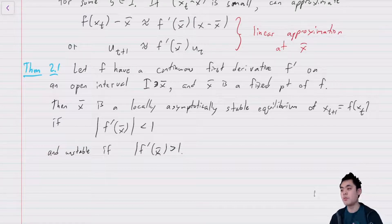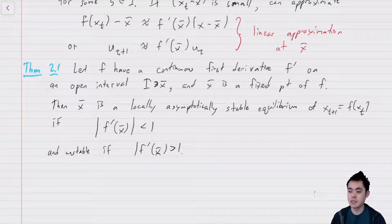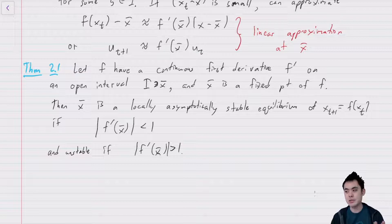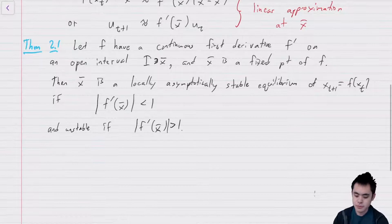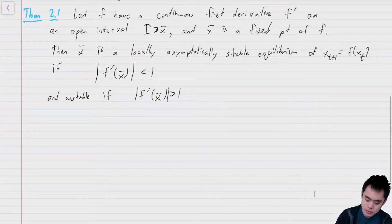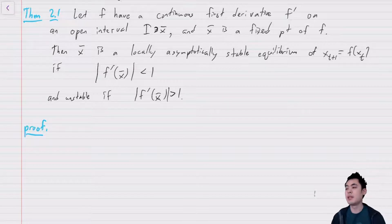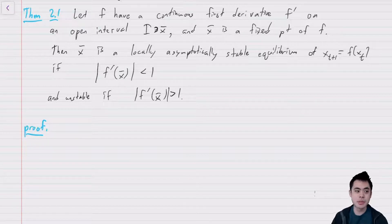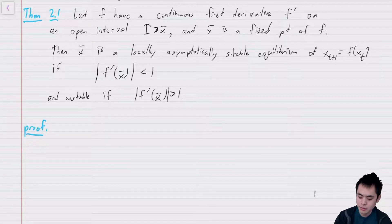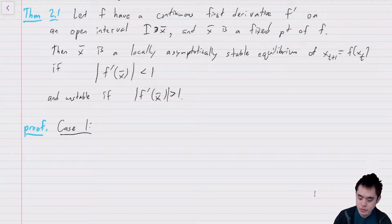Note that we aren't saying anything about what happens when |f'(x-bar)| = 1. That turns out to be a much more subtle case which we'll get to on Thursday but won't be covering in today's video. The basic reason is that when it's equal to 1, you can't just do this first order approximation — you have to deal with the higher order terms.